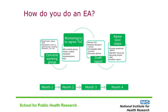Having pulled the team together, some preparatory work will be needed before you do the first workshop. You need to identify existing literature and sources of routinely collected data and develop a draft theory of change. This theory of change will form the focus of the first workshop with stakeholders — those are the policymakers, practitioners, analysts and others who are responsible for the intervention and who will make the ultimate decision about whether to go ahead with an evaluation.